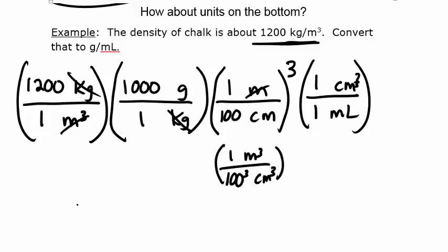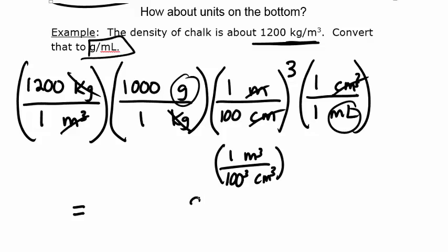Finally, since 1 cubic centimeter equals 1 milliliter, it's a 1-to-1 correspondence. When you cancel all the units and do the math, the top is grams and the bottom is milliliters — just as we wanted. The units are grams per milliliter, and the numerical answer is 1.2.